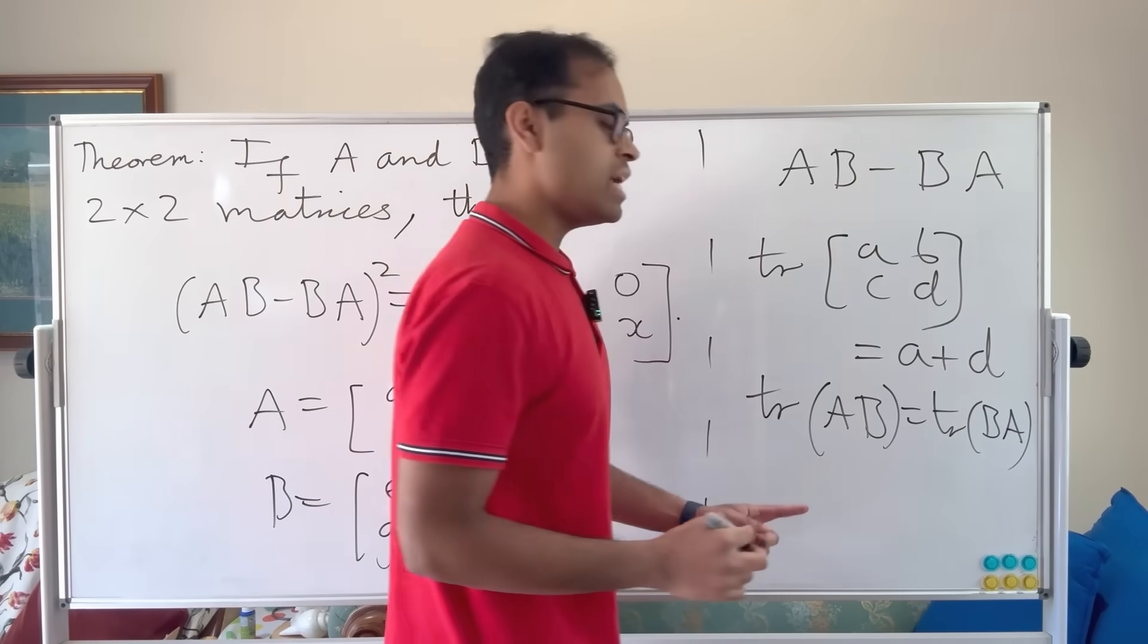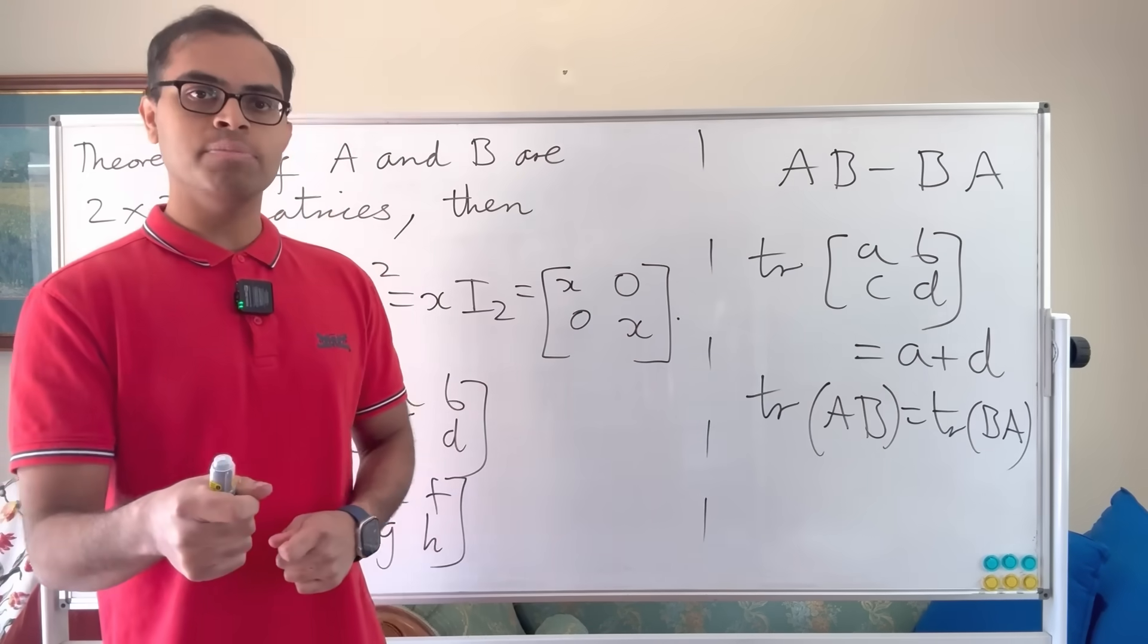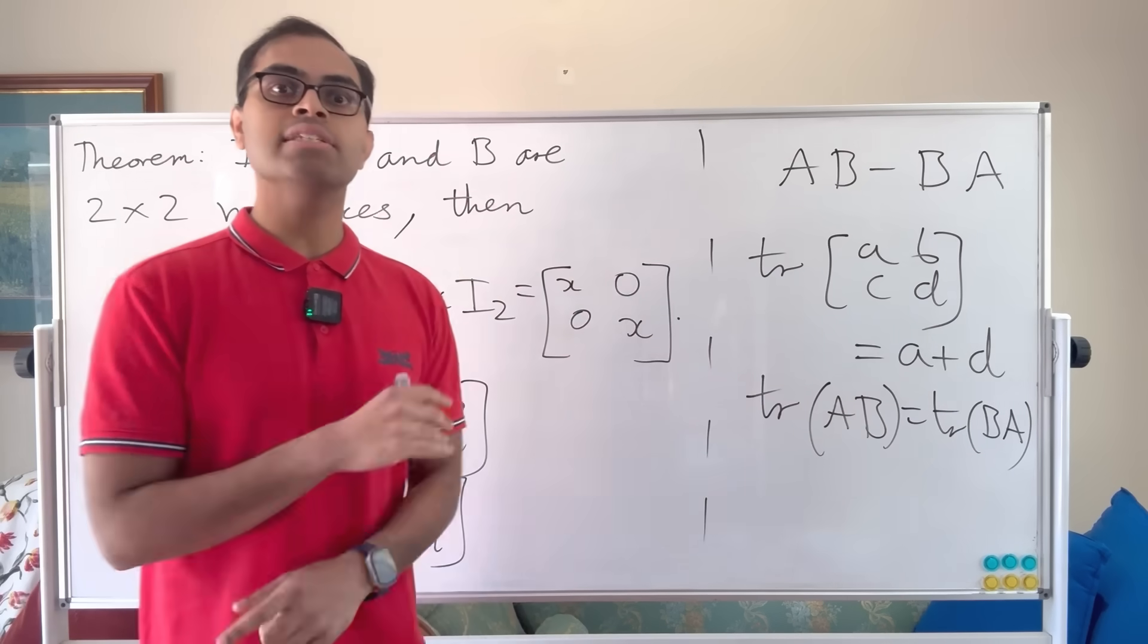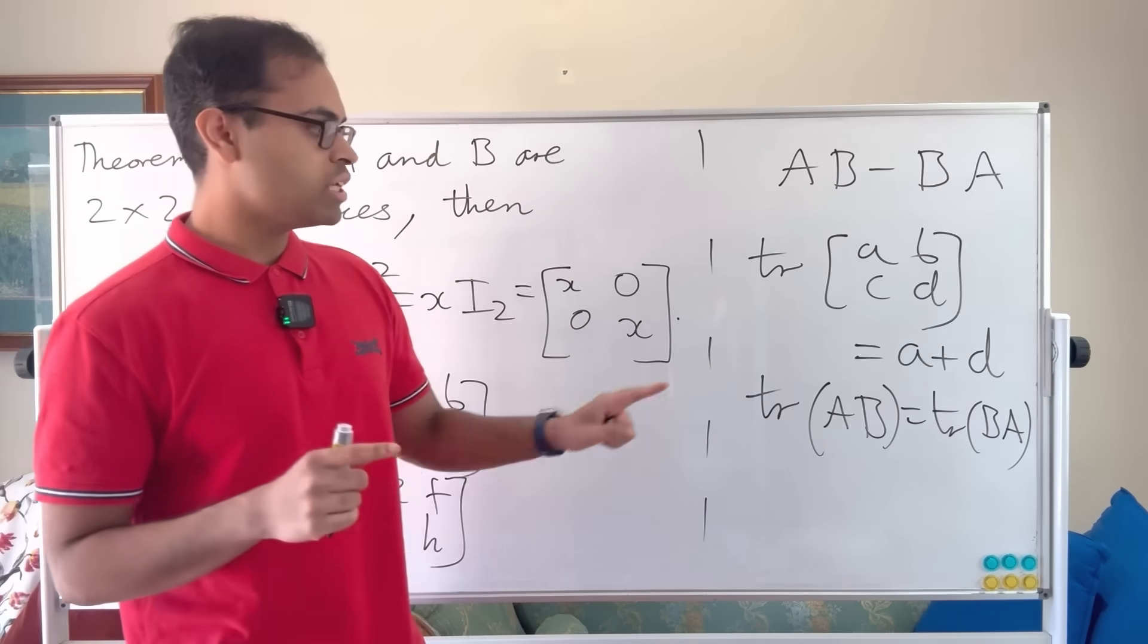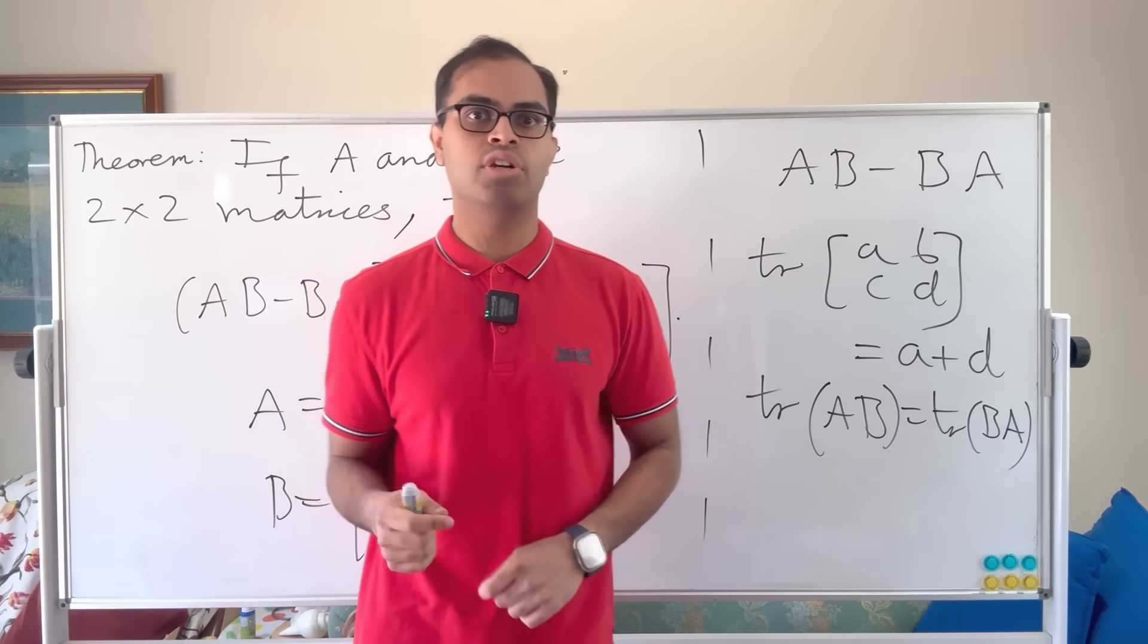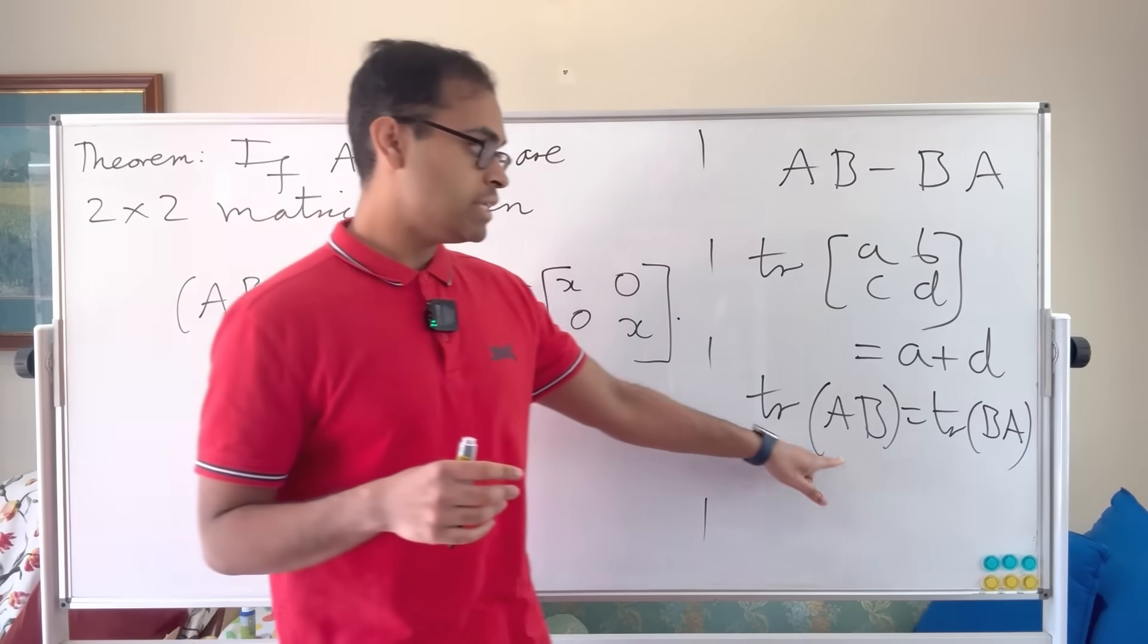So it does not matter what A and B are, you can switch the order of multiplication. There may be different matrices, but their traces are always equal. It's not true that the trace of AB is the trace of A times the trace of B. That's not true. But this statement is true.